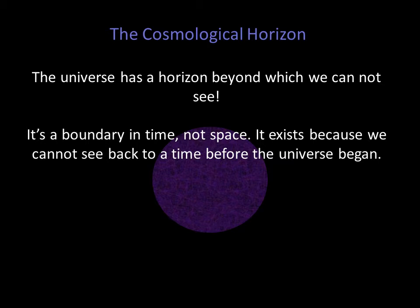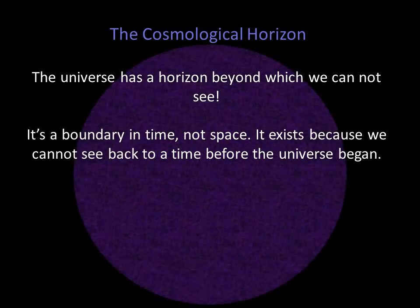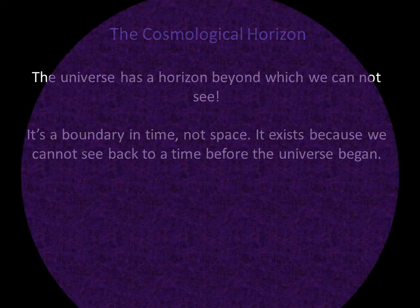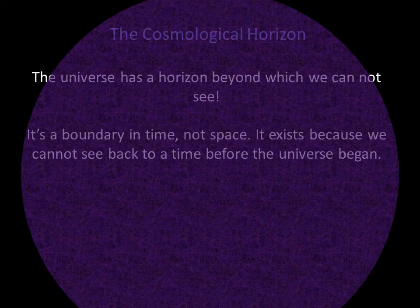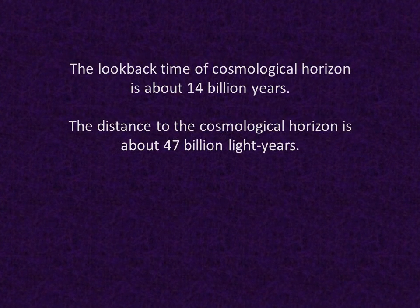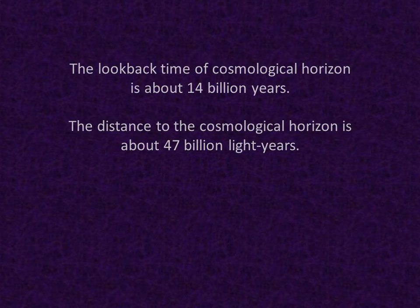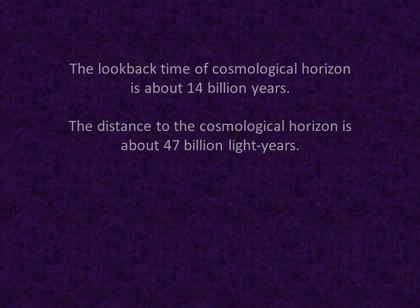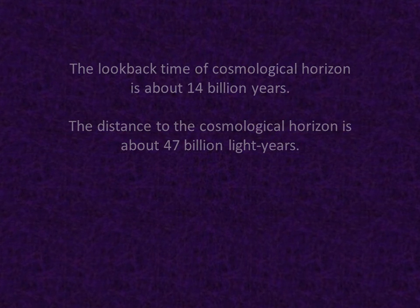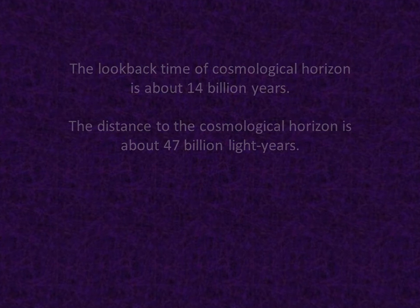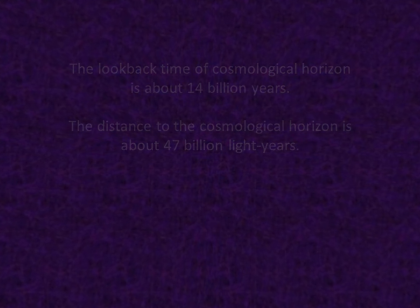I mentioned earlier that the universe doesn't appear to have an edge. But the universe does have a horizon beyond which we cannot see. The cosmological horizon marks the limit of the observable universe. It's a boundary in time, not space. It exists because we cannot see back to a time before the universe began. The universe is about 14 billion years old, so the look-back time of the cosmological horizon is about 14 billion years. The distance to this horizon is, in fact, much greater because of the expansion of space — it's actually around 47 billion light-years.